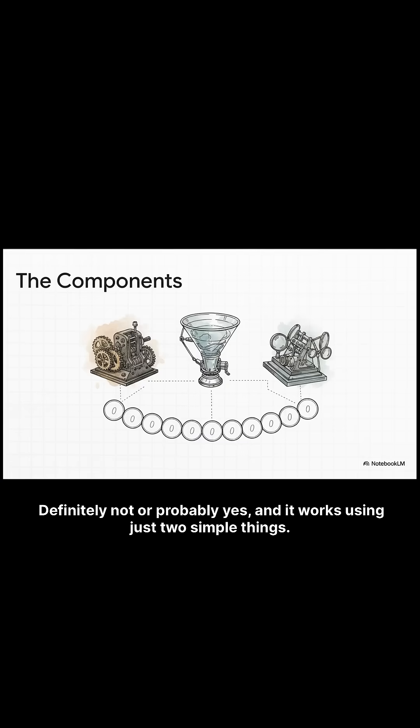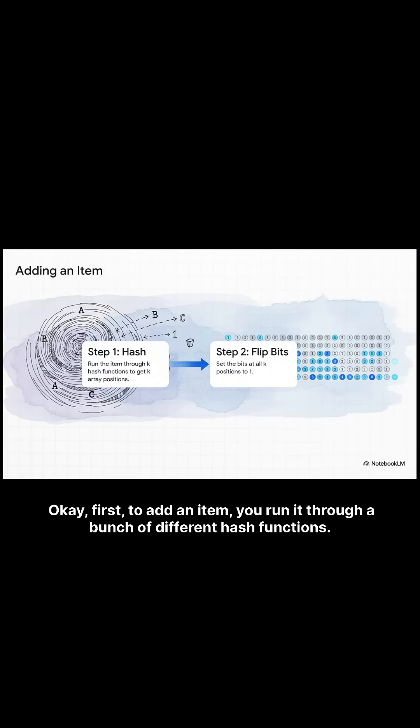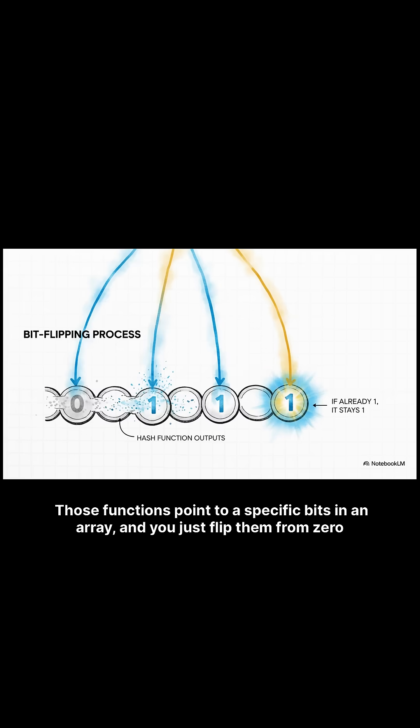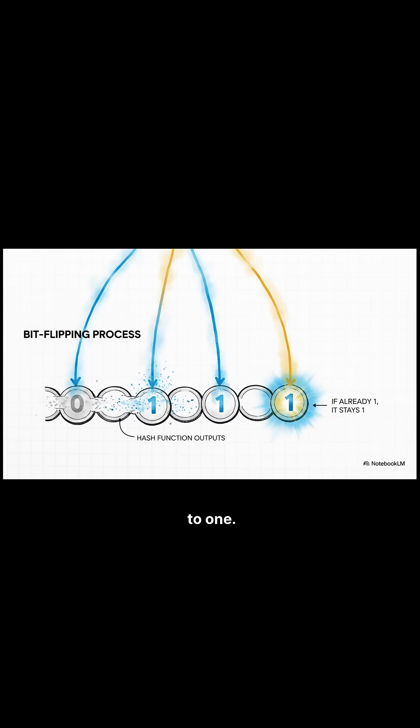It works using just two simple things. First, to add an item, you run it through a bunch of different hash functions. Those functions point to specific bits in an array, and you just flip them from zero to one.